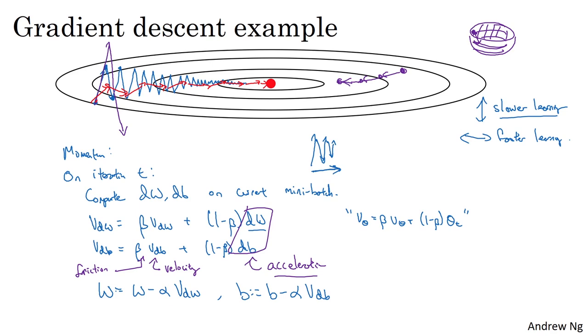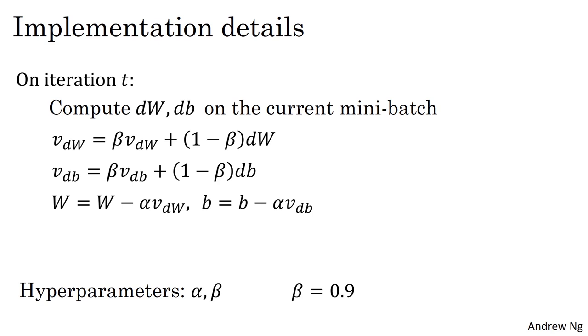Finally, let's look at some details on how you implement this. Here's the algorithm. And so you now have two hyperparameters, the learning rate alpha as well as this parameter beta which controls your exponentially weighted average. The most common value for beta is 0.9. We're averaging over the last 10 days temperature, so this is like averaging over the last 10 iterations gradients. And in practice, beta equals 0.9 works very well. Feel free to try different values and do some hyperparameter search, but 0.9 appears to be a pretty robust value.